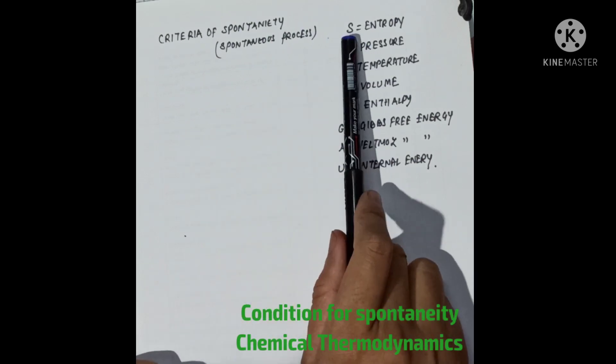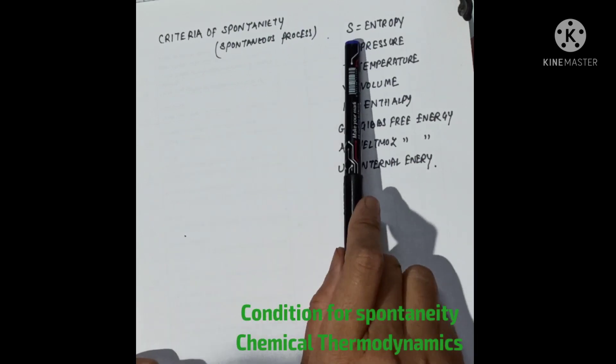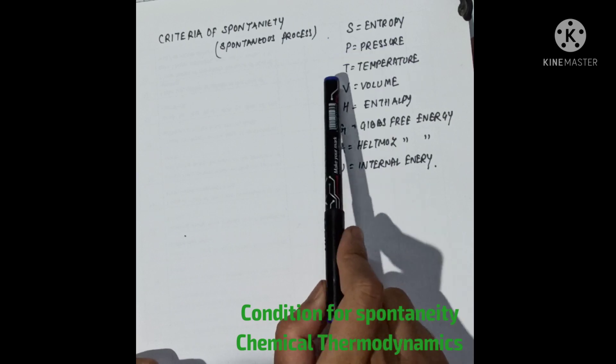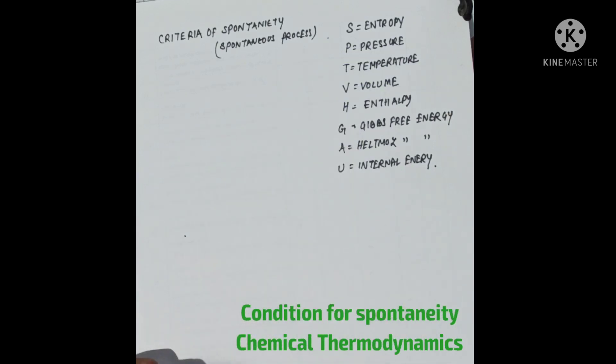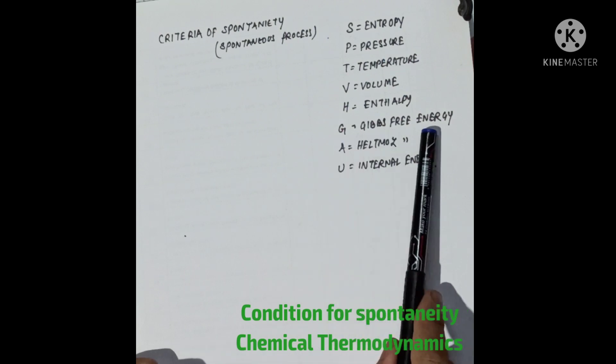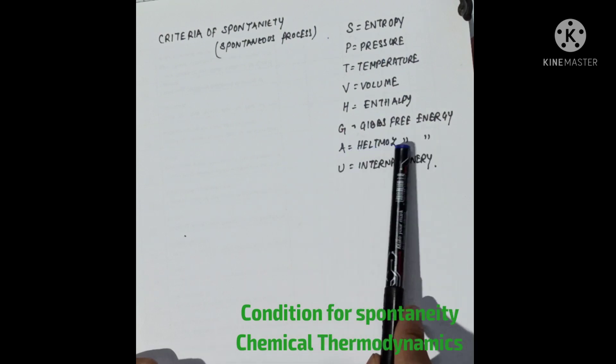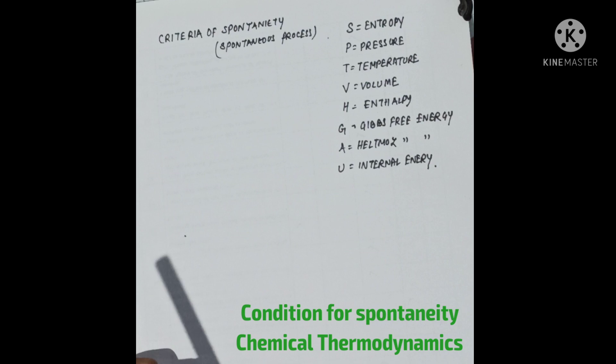We have already learned the thermodynamic quantities. S is entropy, P is pressure, T is temperature, V is volume, H is enthalpy, G is Gibbs free energy, A is Helmholtz free energy, and U is internal energy.